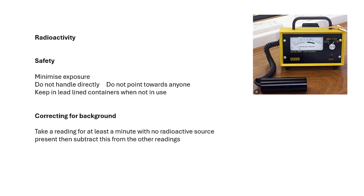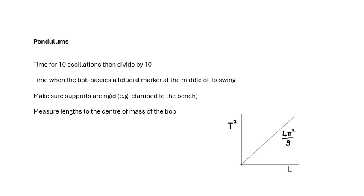Pendulums - time for 10 oscillations and divide by 10. Time when the bob passes a fiducial marker. Now a fiducial marker basically means that there's the bob and you have some kind of a marker on the table, and you time it when it goes past that marker, yes, in that direction or whatever direction. And that's called a fiducial marker, and that's the correct way of timing a pendulum. Make sure your supports are rigid, so they're clamped to the bench, for example. Make sure you measure the length to the center of mass of the bob.